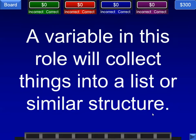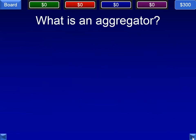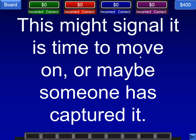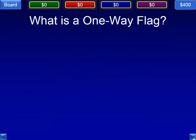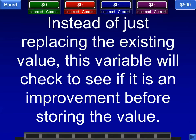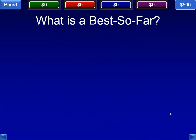Next question: a variable in this role will collect things into a list or similar structure. We call that an aggregator — an aggregator variable role. Next question: this might signal it's time to move on or maybe someone has captured it. We call that a one-way flag variable role. Last one: instead of just replacing the existing value, this variable will check to see if it is an improvement before storing the value. We call that the best so far variable role.